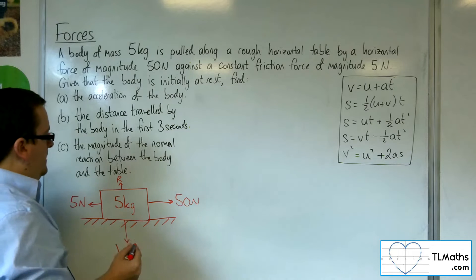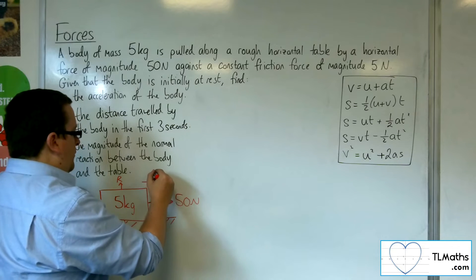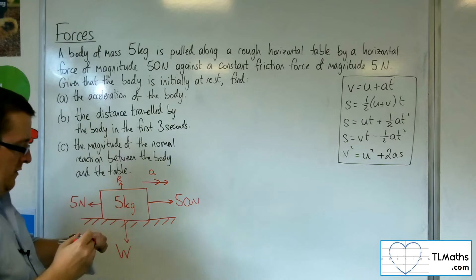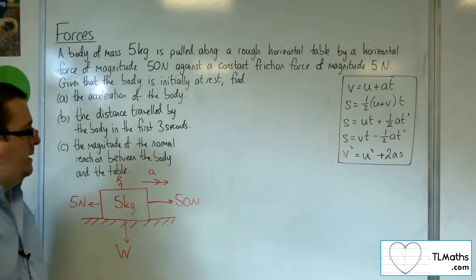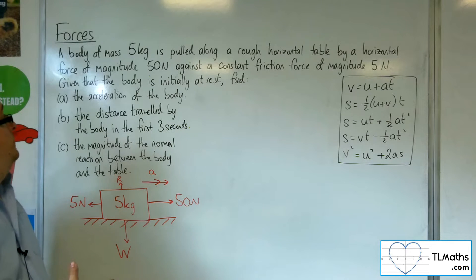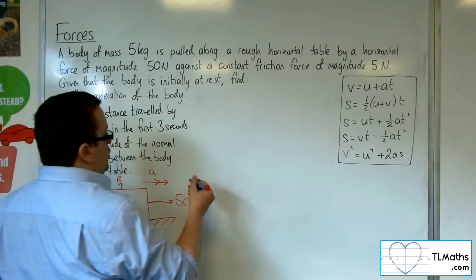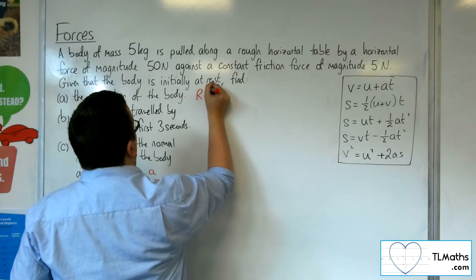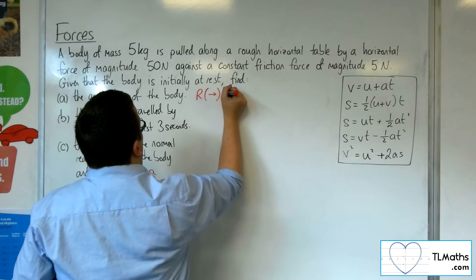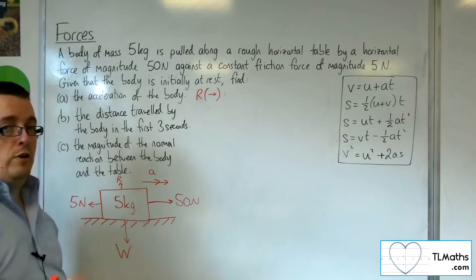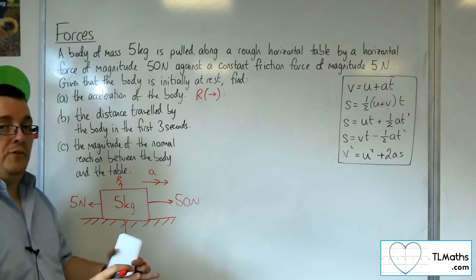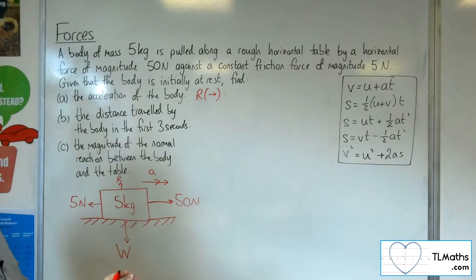Now the particle is accelerating to the right, and I'm going to label that as A. So this is the situation. To find the acceleration of the particle, I need to resolve horizontally in the direction of the acceleration. I'm going to take that direction as positive. It makes your life a whole lot easier if you do.